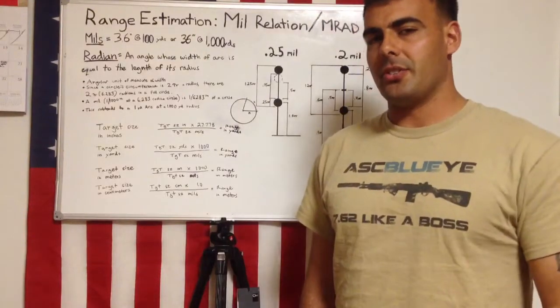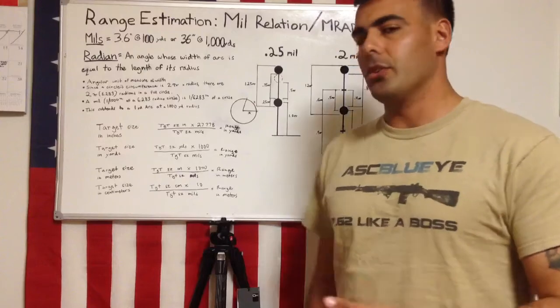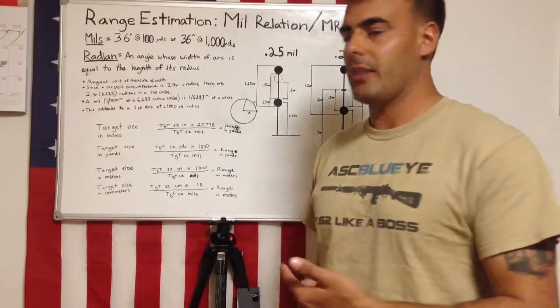A mill measures angular width, and a radian is an angle whose width of arc is equal to the length of its radius.